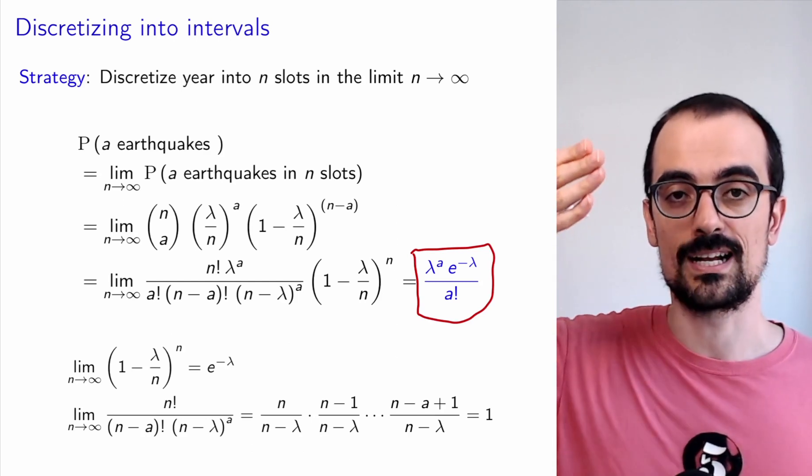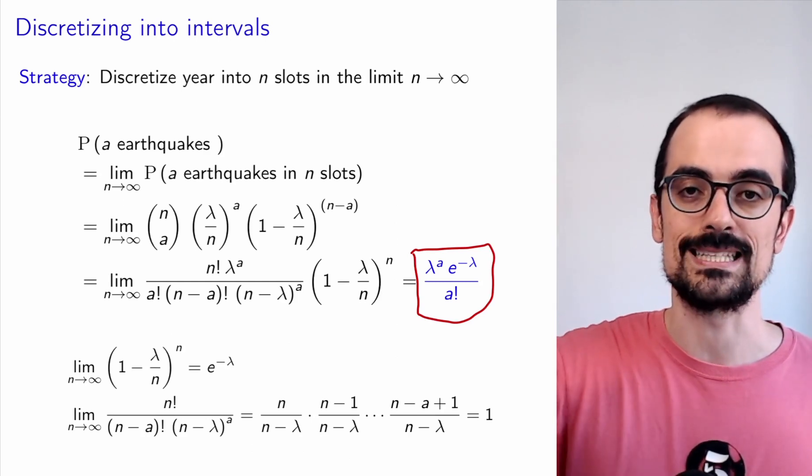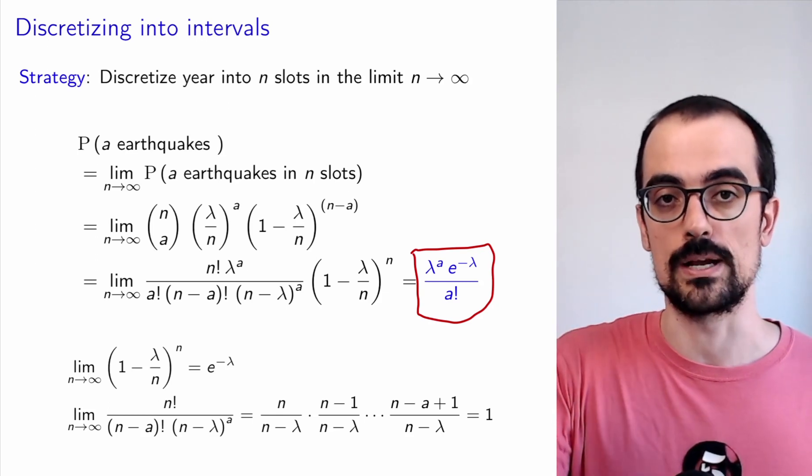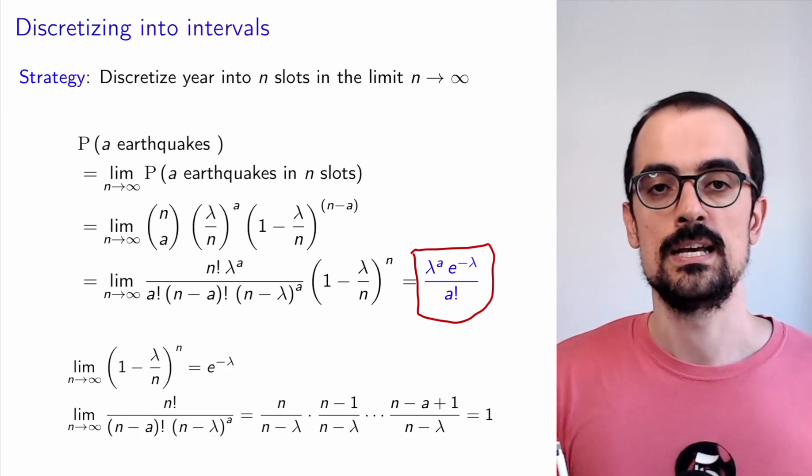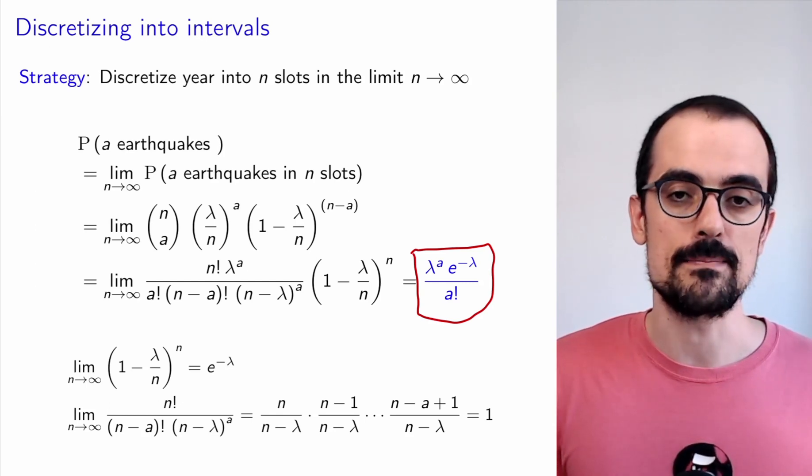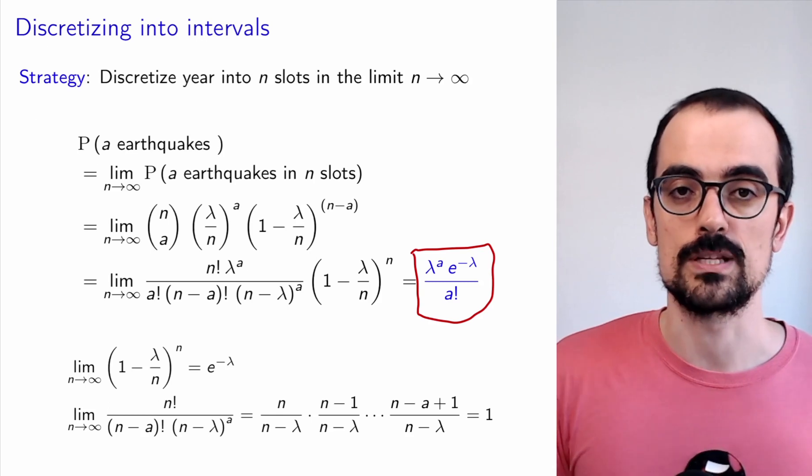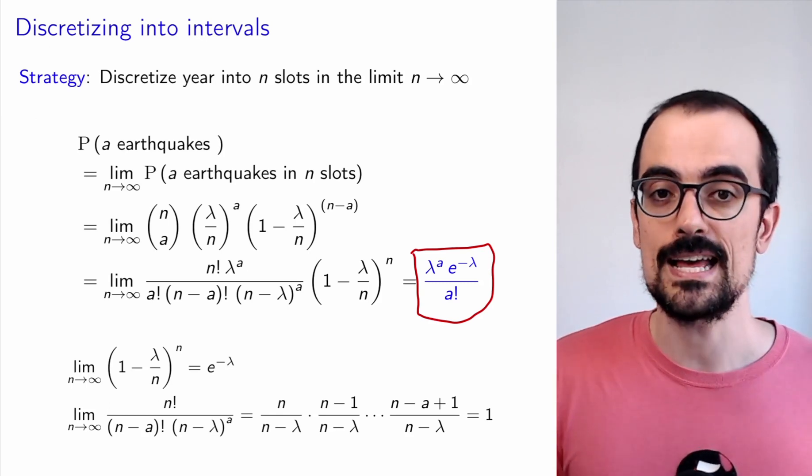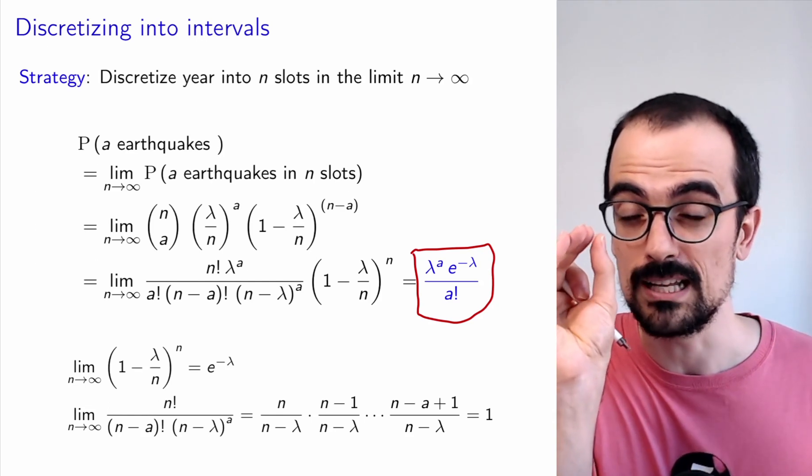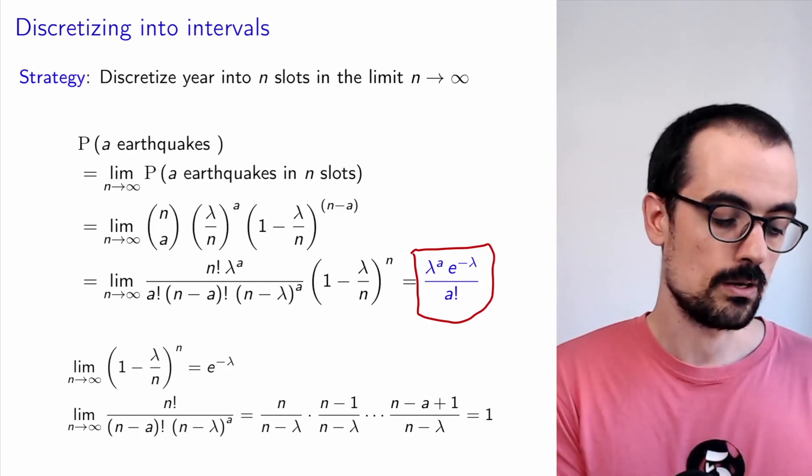So again, we're cutting up the year into slots. We get N slots. Under our assumption, the probability of seeing A earthquakes within those N slots is given by a binomial, by the binomial PMF. We plug in the value of the parameter, which is lambda over N, and then we take the limit where N goes to infinity because we're considering arbitrarily small slots, and we get this probability.